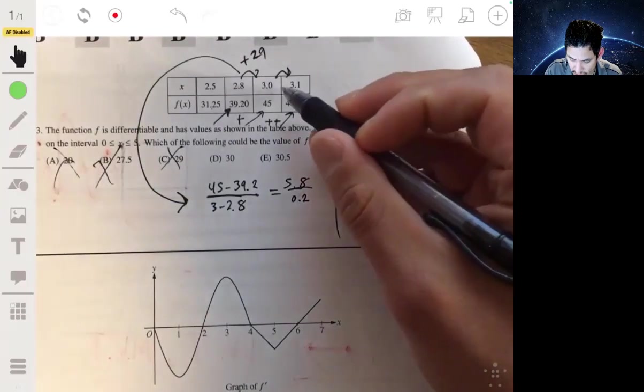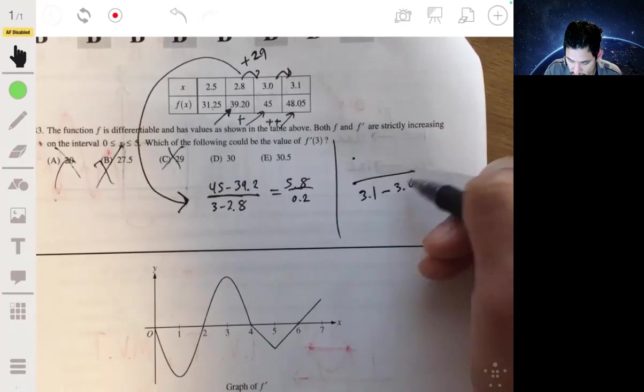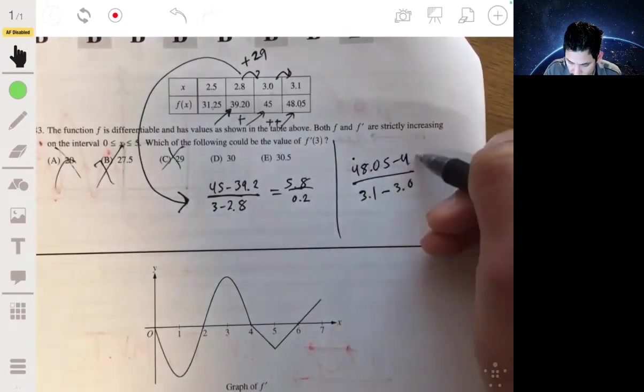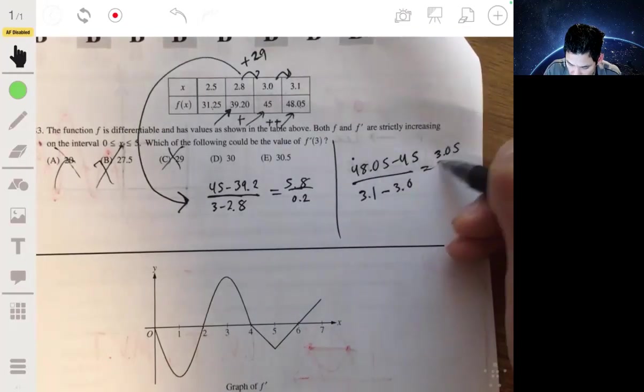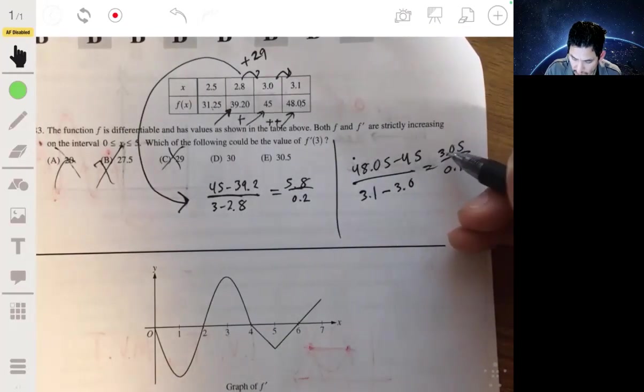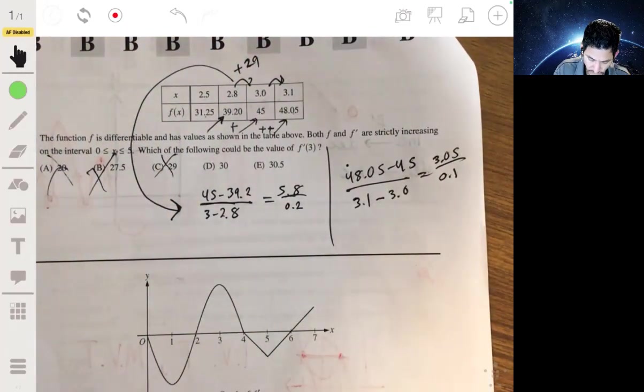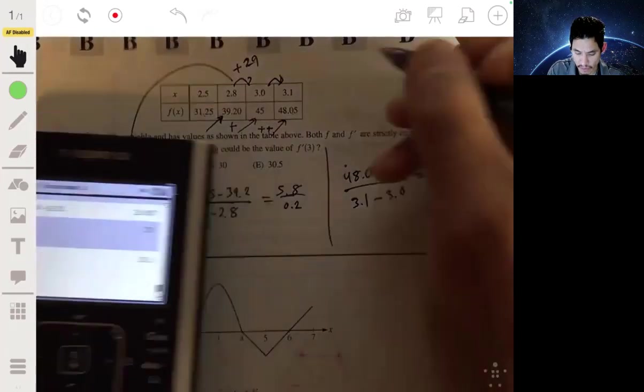Find the difference in X under the difference in Y. Difference in Y on top: 48.05 minus 45, you get 3.05 over 0.1. That's 30.5. So the slope there is 30.5.